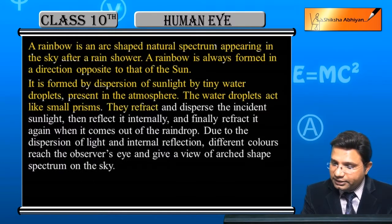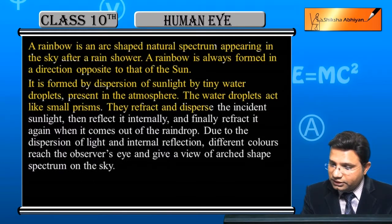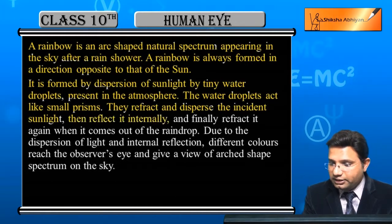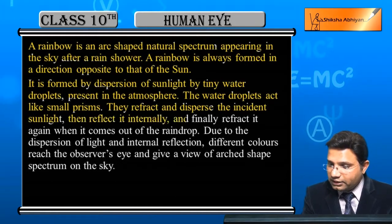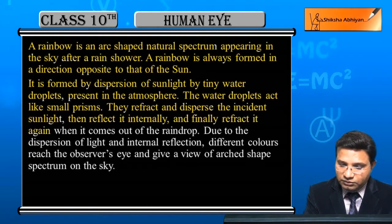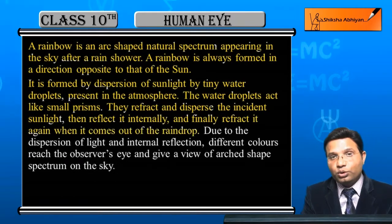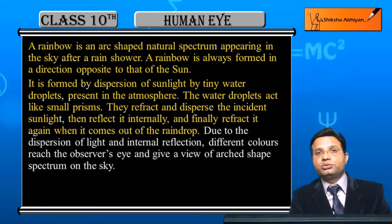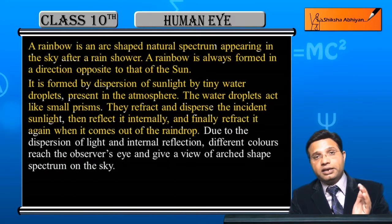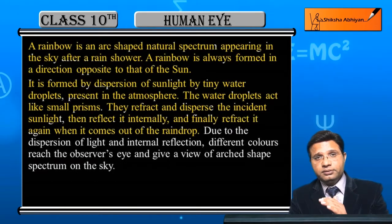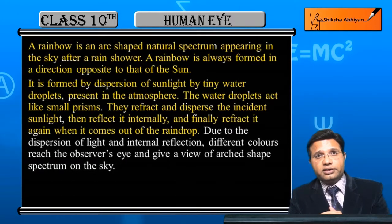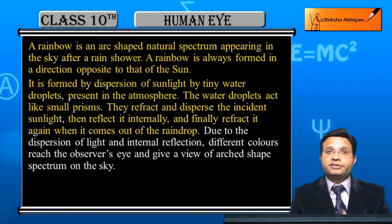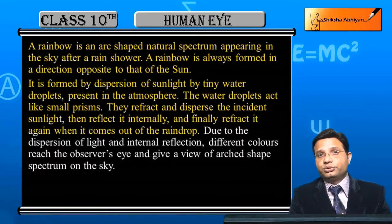The droplets refract and disperse the incident sunlight, then reflect it internally, and finally refract it again when it comes out of the raindrop. There are three types of processes: first, refraction; then total internal reflection; and then again refraction.